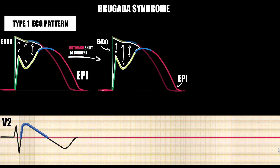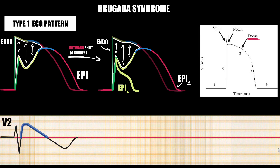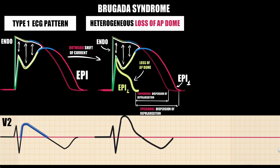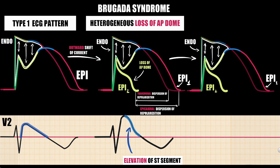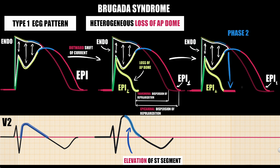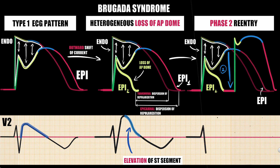Further outward shift of current leads to loss of the action potential dome in some parts of epicardium, presumably due to deactivation or reduction of inward calcium current. The loss of the action potential dome in epicardium but not endocardium results in marked transmural dispersion of repolarization and epicardial dispersion of repolarization, leading to further ST-segment elevation and development of a vulnerable window. During this window, propagation of the action potential dome from sites where it is maintained to sites where it is lost causes local re-excitation, leading to a closely coupled extrasystole — called the phase 2 re-entrant mechanism.